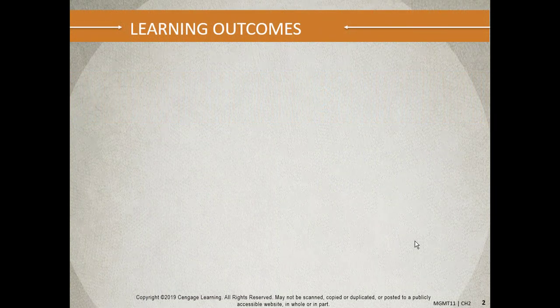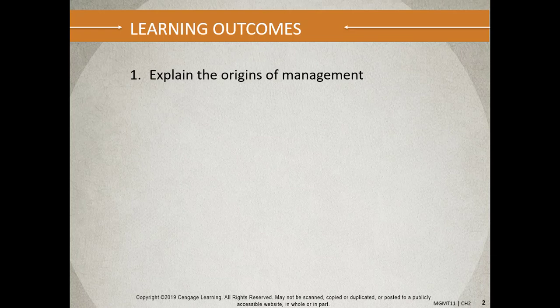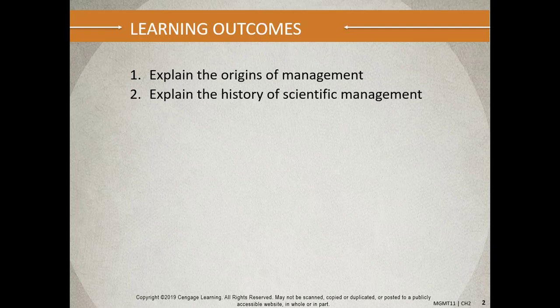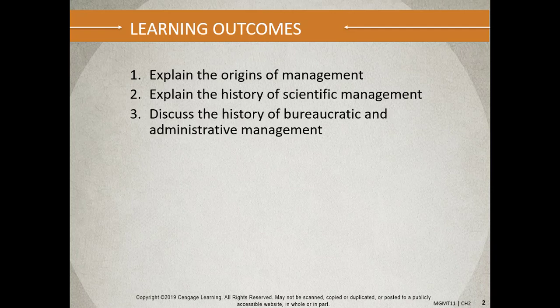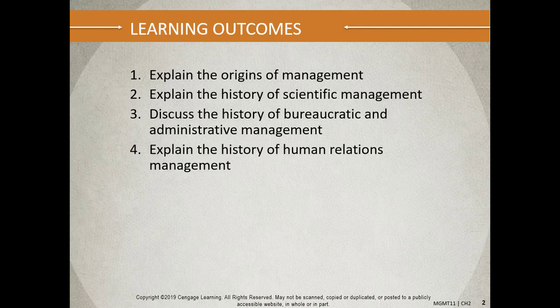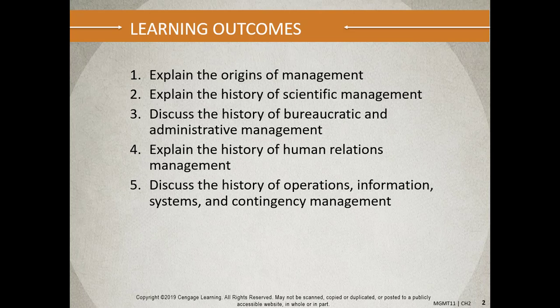Moving forward, we'll cover a lot of ground in terms of the History of Management. We'll look at the origins of management and the history of scientific management — that's how we'll bring things up to speed in the late 1800s to early 1900s. Then we'll get into bureaucratic and administrative management and human relations management. We'll see two timelines: one focused on efficiency, covering scientific and bureaucratic/administrative management, and a humanistic timeline covering human relations management, operations, information systems, and contingency management.